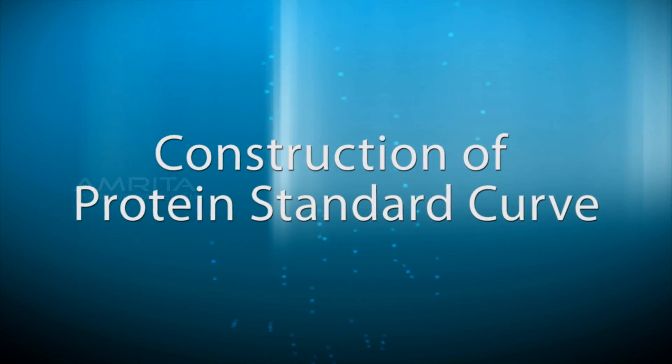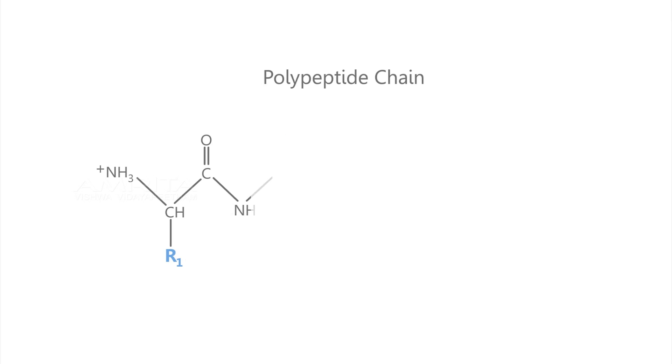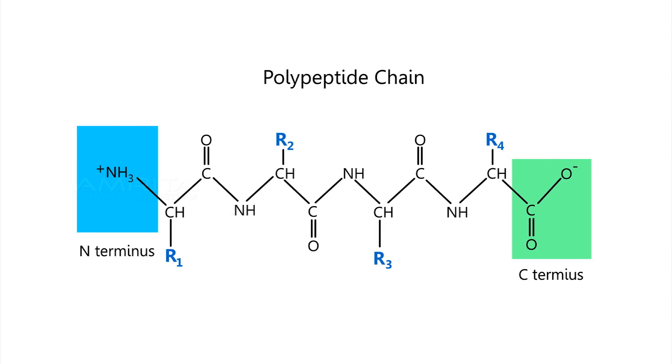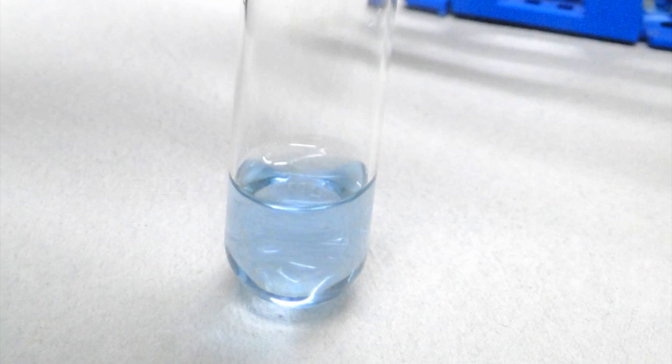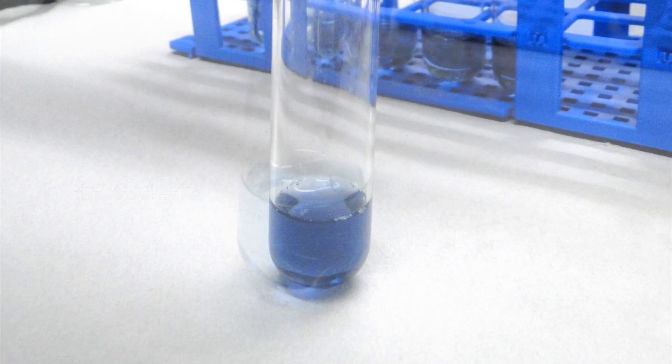Construction of Protein Standard Curve. The Lowry assay for total protein is one of the most commonly performed colorimetric assays. This procedure is sensitive because it employs two color-forming reactions.